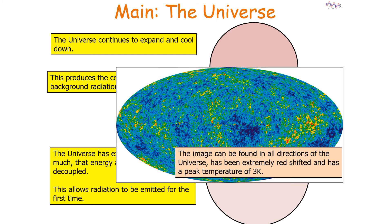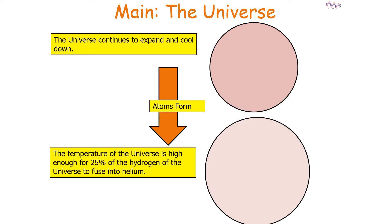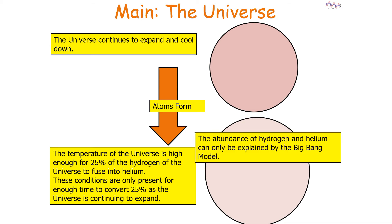The cosmic microwave background image can be found in all directions of the universe. It's been extremely redshifted and has a peak temperature of 3 Kelvin. The cosmic microwave background can only have been formed with the Big Bang model. In the early universe, the temperature was high enough for 25% of the hydrogen to fuse into helium, but these conditions were only present long enough to convert 25% because the universe continued to expand. The abundance of hydrogen and helium can only be explained by the Big Bang model.